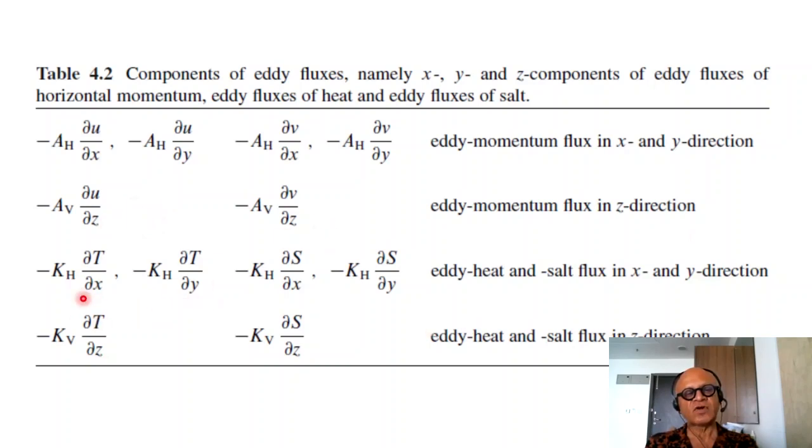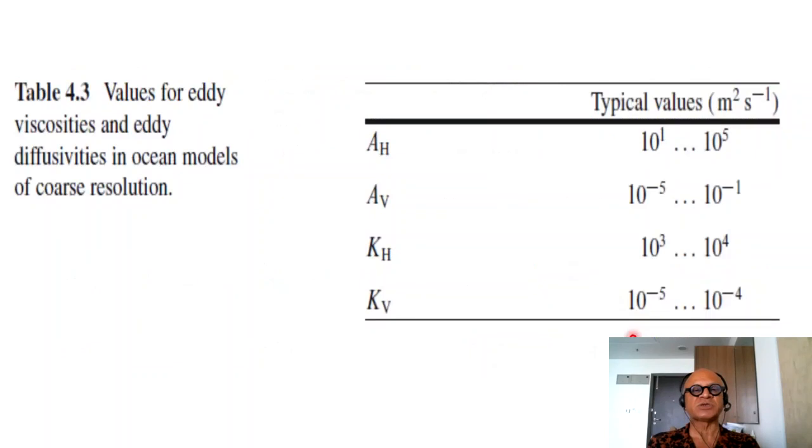And similarly for temperature and salt, eddy heat and salt flux in the x and y directions and in the z direction. What is telling is that the value for eddy viscosities and eddy diffusivities in ocean models, of course, resolution dependent, have a large range. Typical values of horizontal eddy viscosities and diffusivities, you can see that it ranges from 10^1 to 10^5 meters squared per second. Often they are used as tuning parameters to fit the Atlantic meridional overturning circulation, and so on.